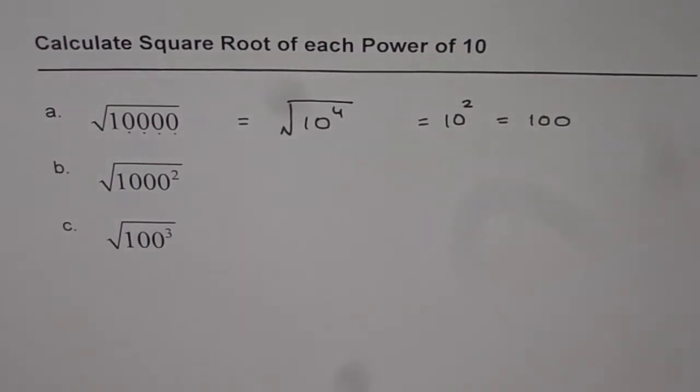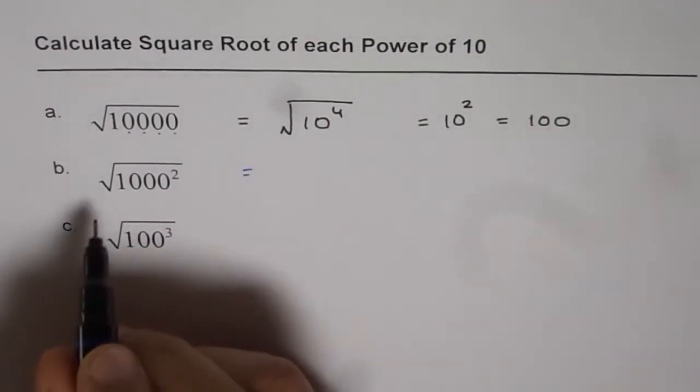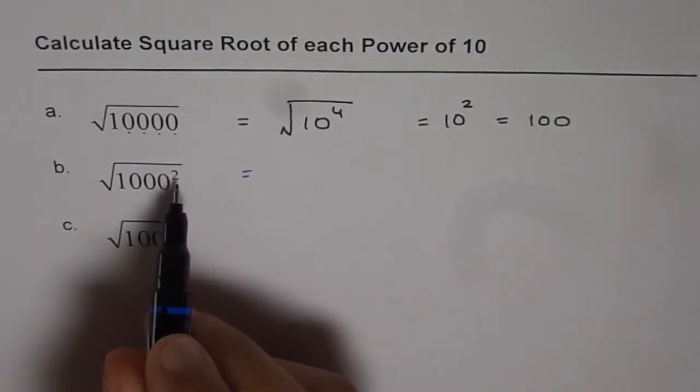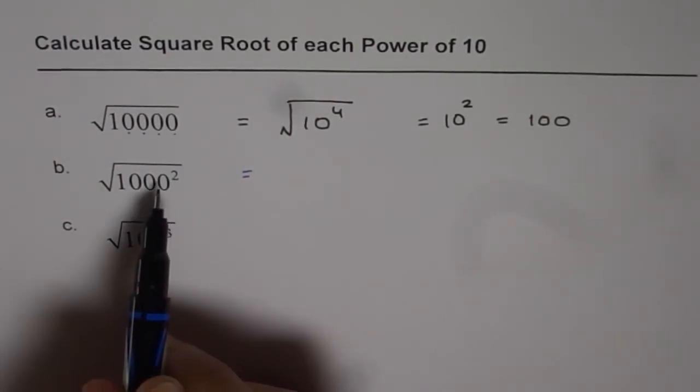The next one is square root of thousand squared. Now, square root and square are reverse of each other, so square root and square cancel out and you just get thousand as your answer.